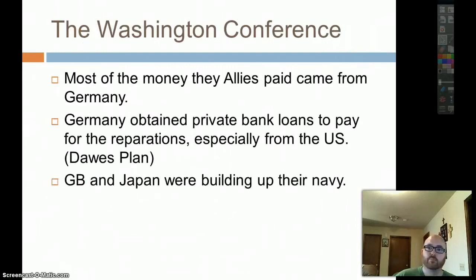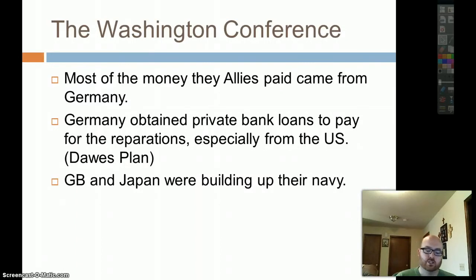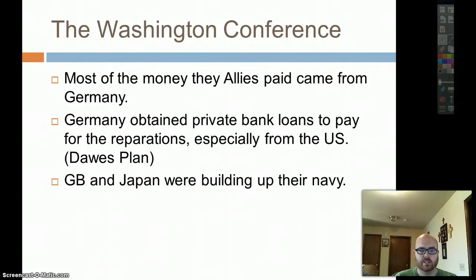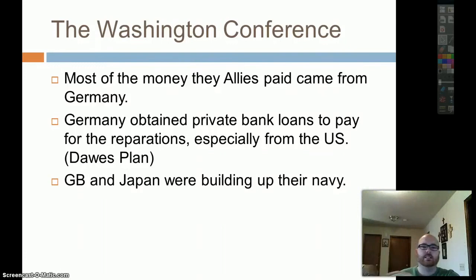Most of the money the Allies paid came from Germany. Germany obtained private bank loans to pay for reparations, especially from the U.S. — it's called the Dawes Plan. Germany was flat broke, so we're going to loan Germany money so Germany can pay France and Great Britain, so France and Great Britain can pay us. Basically, we're paying ourselves back. It's a triangle: we loan Germany money, Germany pays Great Britain and France, Great Britain and France pays us.